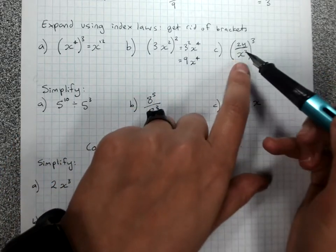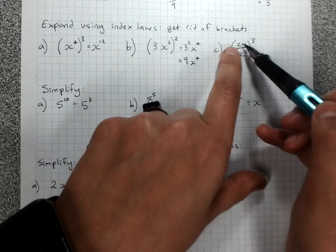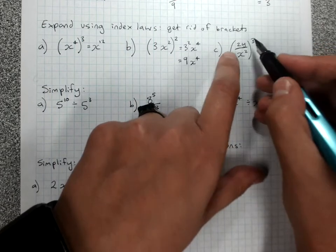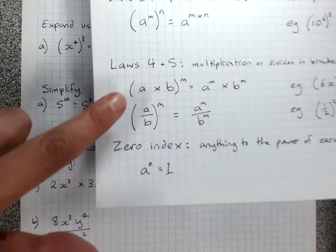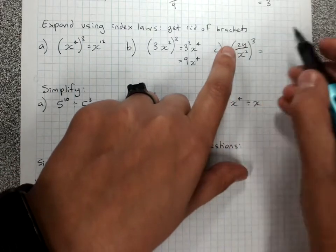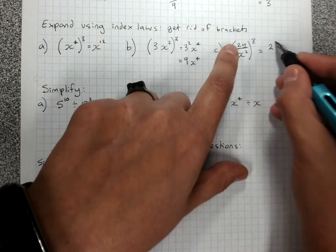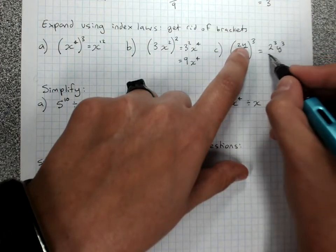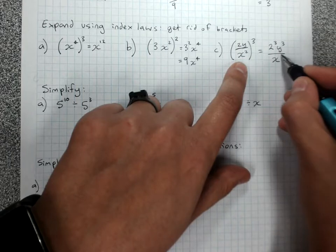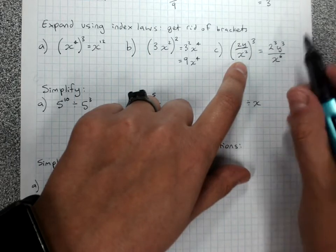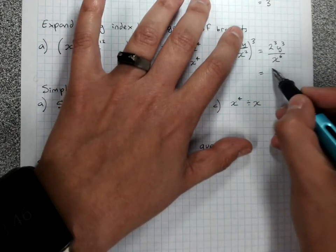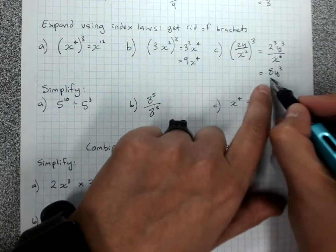This one is a combination of two index laws — there's a product on the top and there's a fraction, so it's getting complicated. Using laws 4 and 5, I put every different thing in the brackets to the outside power. On the top: 2 cubed and y cubed; on the bottom: x squared cubed — I multiply 2 times 3 to get x to the 6. Remember, 2 cubed is 8 — 2 times 2 times 2 is not 6, be careful. So the answer is 8y³ over x⁶.